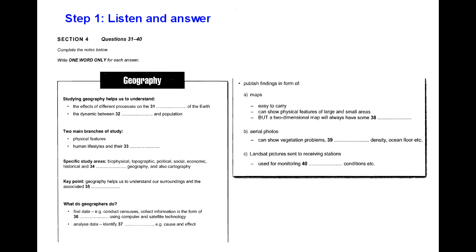Our current use of carbon fuels is a good example of that. There are more specific study areas to consider too, and we'll be looking at each of these in turn throughout the semester. These include biophysical geography — the study of the natural environment and all its living things. Then there's topography, which looks at the shapes of the land and oceans. There's also political geography and social geography, which is the study of communities of people. We have economic geography, in which we examine all kinds of resources and their use.